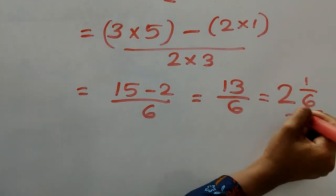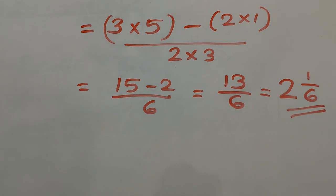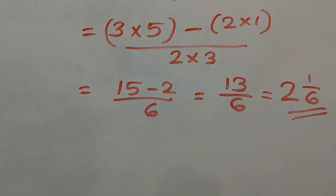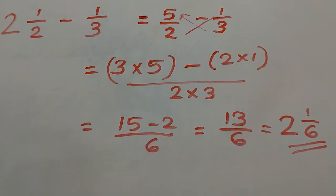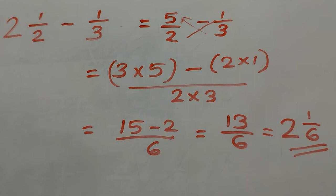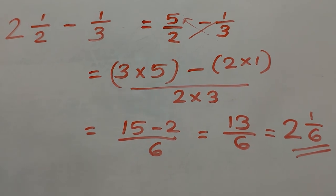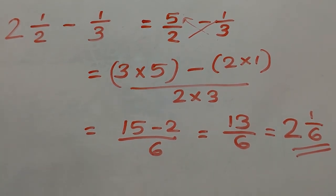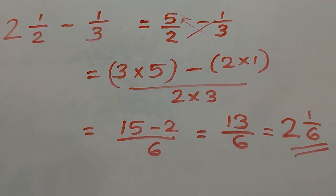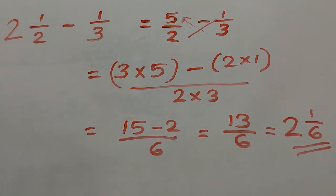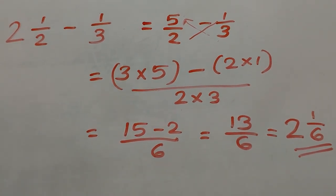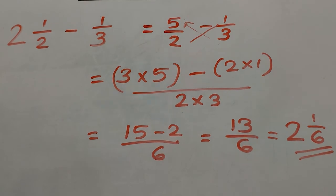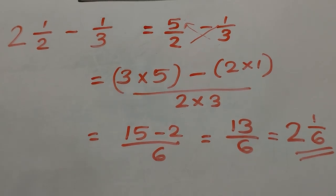The answer is 2 and 1 by 6. This method can also be applied to two mixed fractions. When the denominators are equal, use direct subtraction. When they have a common factor, use the cross multiplication method or the LCM method. Thank you.